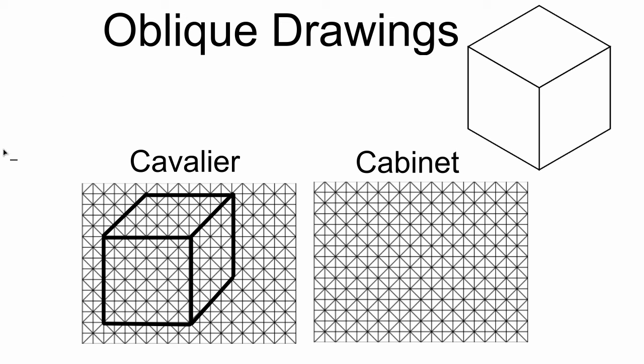Now, if you notice, I get something that looks very much like the isometric. The difference here is my lines are at 45 degrees to show depth. They're not at 30 degrees, which is what an isometric uses. And it looks a little bit skewed, a little bit bigger than what the actual cube looks like.